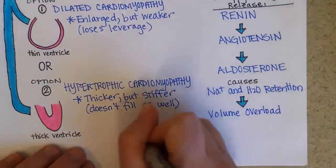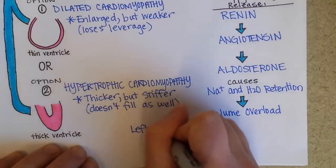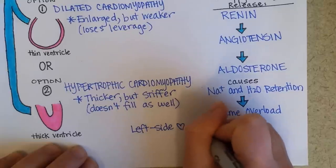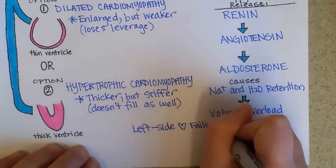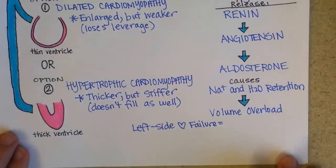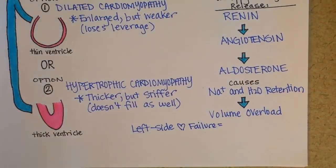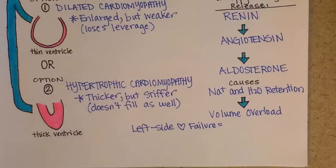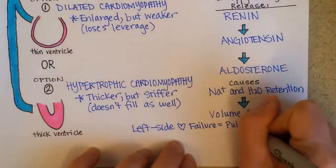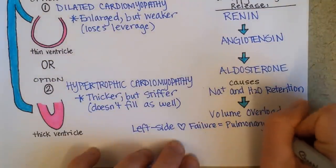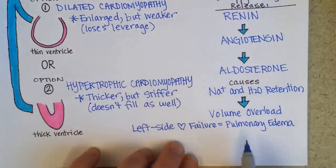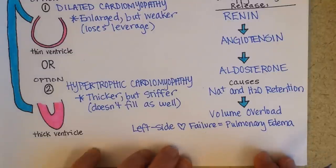If it's the left side of the heart that failed first, blood will be waiting to enter the left side of the heart, and where is it waiting around? It's waiting around in the lungs. Blood that sits around or loiters gets itself into trouble — it starts seeping into the tissues. If it's in the lungs, it can cause pulmonary edema. That's where we get that word congestion from: there's actually pulmonary congestion, too much fluid in the lungs.